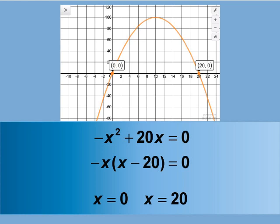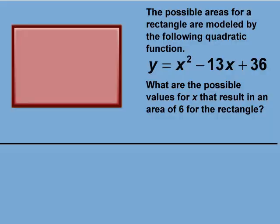Let's look at another example. The possible areas for a rectangle are modeled by the following quadratic function: y equals x squared minus 13x plus 36. What are the possible values for x that result in an area of 6 for the rectangle?